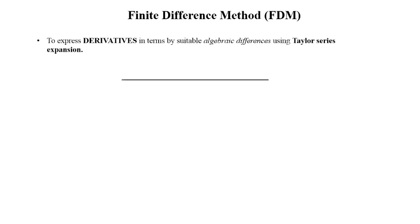Let us consider a one-dimensional domain. The domain can be represented by a collection of discrete grid points, and the distance between discrete points is h. We have a node i at a distance x from the left boundary; the subsequent node on the right hand side is i+1 and the one on the left hand side is i−1.